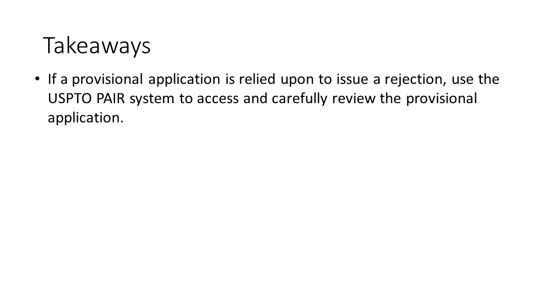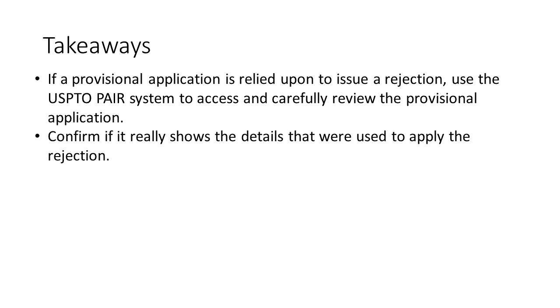So what are some takeaways or lessons we can learn? If a provisional application is relied upon to issue a rejection, use the USPTO PAIR system to access and carefully review the provisional application. Once you access it, read it carefully and confirm if it really shows the details that were used to apply the rejection — it may not be equal to the regular application. Note that I have a video on provisional patent applications and one specifically on the pitfalls of a provisional patent application that doesn't contain all the important details, and I will put links to those videos in the description.